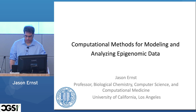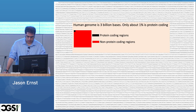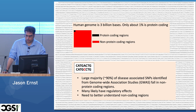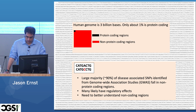To motivate this, the human genome is about 3 billion base pairs long, but only 1% codes for proteins. As we've heard from many of the talks this week, there's been a lot of success identifying genetic variants associated with a variety of common diseases and phenotypes. The vast majority of these are falling into non-coding regions of the genome, likely having regulatory effects, motivating a need to better understand and annotate the non-coding genome.